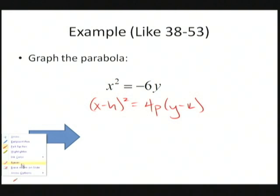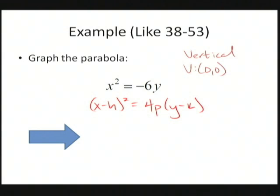So that tells me this is a vertically oriented parabola. I also know that the vertex is at (0, 0) because I don't have any h or k values. I also notice that 4P must equal -6, and that means that P = -6/4 or -3/2, so P = -1.5.